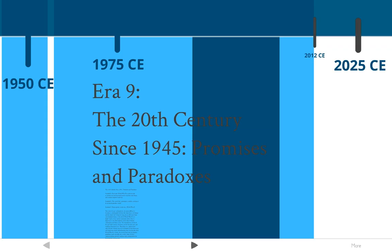For our 9th era, we will be studying the second half of the 20th century — since 1945, about the past 70 years. We'll be looking at the promises and paradoxes: some of the promises that people have made trying to make the world a better place and solve those crises from the early 20th century, and then some of the problems that come with that.